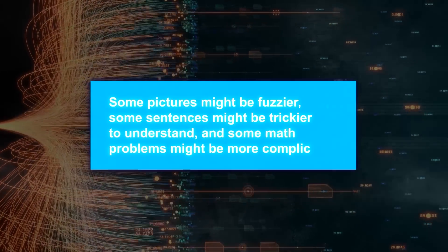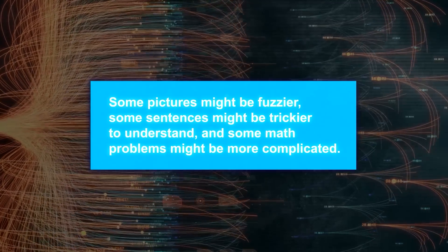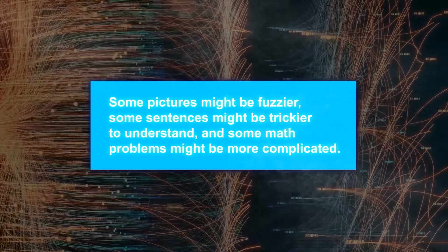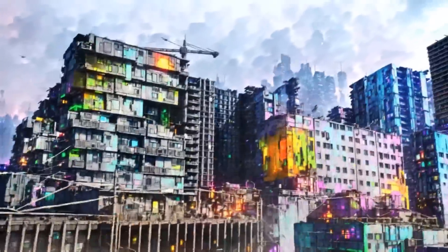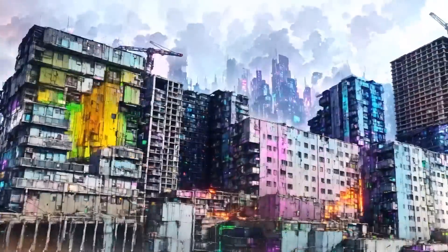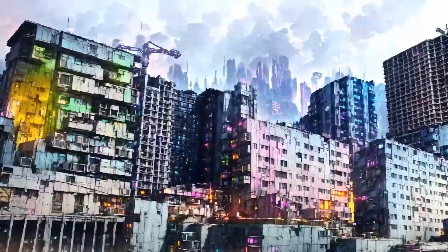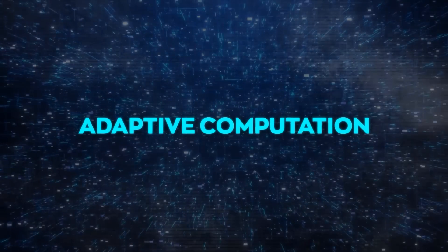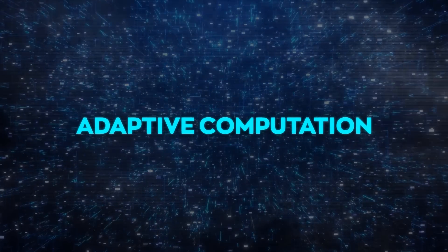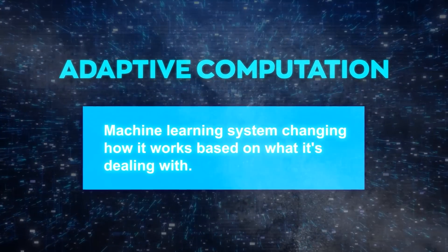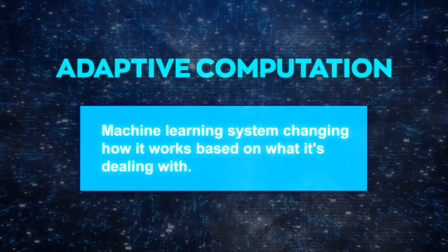That's not great because not everything is equally challenging or needs the same focus. Some pictures might be fuzzier, some sentences might be trickier to understand, and some math problems might be more complicated. Ideally, we would want our machine learning tool to change its effort depending on how hard the task is, putting more work into difficult tasks and less into easy ones. That's where adaptive computation comes in handy — it's all about a machine learning system changing how it works based on what it's dealing with.